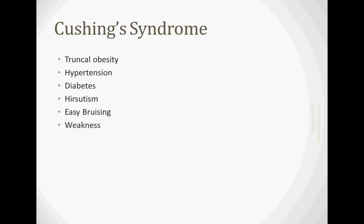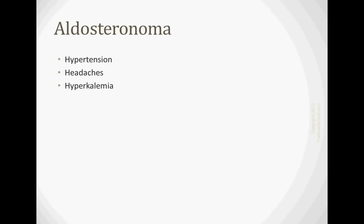Cushing syndrome also can lead to hirsutism, easy bruising, and weakness. If you have an aldosteronoma, again of the zona glomerulosa, then you're going to keep your sodium. Aldosterone works specifically on the distal convoluted tubule and the collecting ducts. And you're also going to be getting rid of your potassium as you retain the sodium so you can get hypo, not hyper. This is an error on my slide here. It should be hypokalemia. And you get headaches as well.